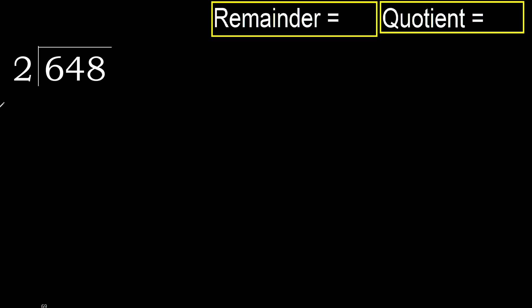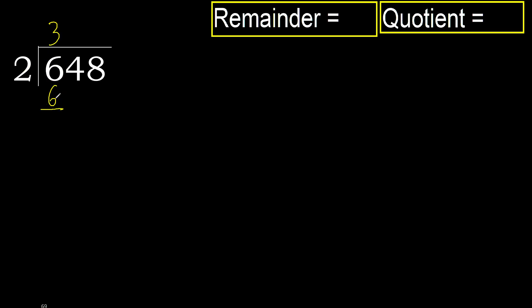648 divided by 2. 6 is not less, therefore with 6. Multiply by which number is nearest but not greater. 2 multiplied by 4 is 8 — 8 is greater. Multiply by 3: 6, is not greater. Ok. 6 minus 6 is 0.